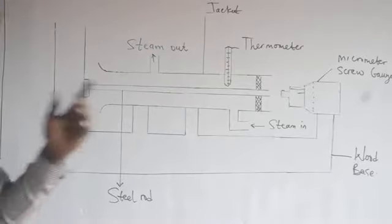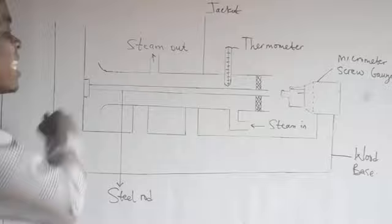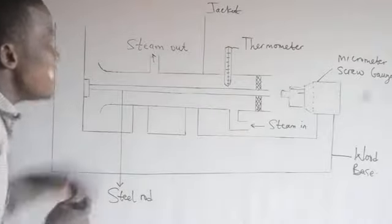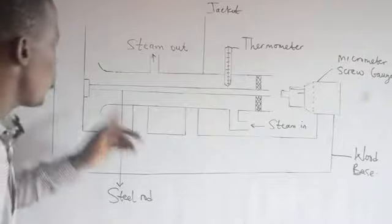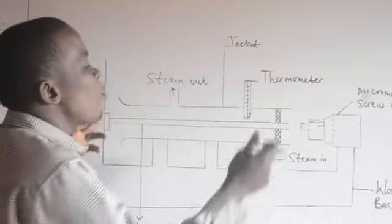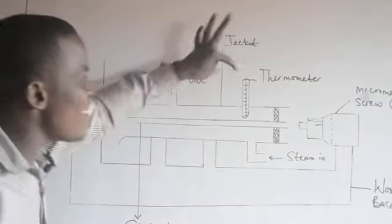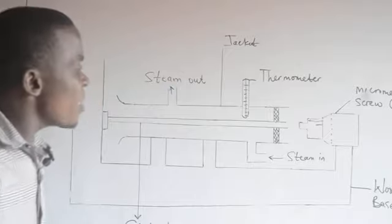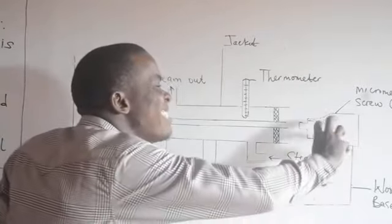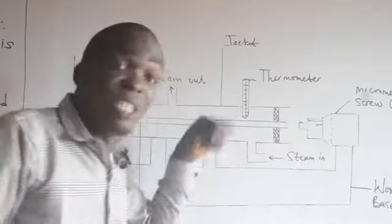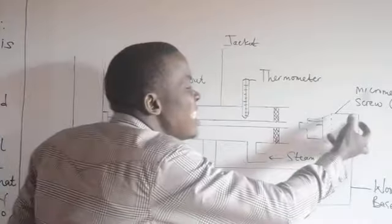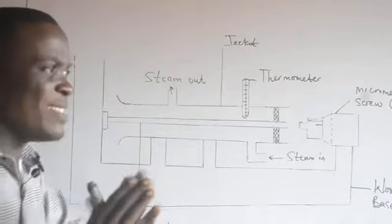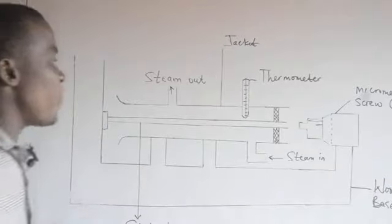We have a steam jacket. In this experiment — known as Canada's experiment — the length of the steel rod is first measured with a meter rule. That is the first step: you have to know the initial length of the steel rod before it is positioned inside the apparatus. After that, the thermometer is used to measure the initial temperature at which the steel rod is placed in this environment. Then the micrometer screw gauge is adjusted to check the initial state of the steel rod, and then reduced back slightly to create space for any expansion that may occur.